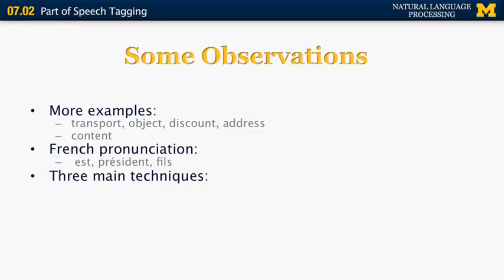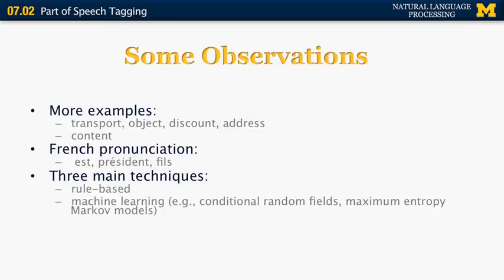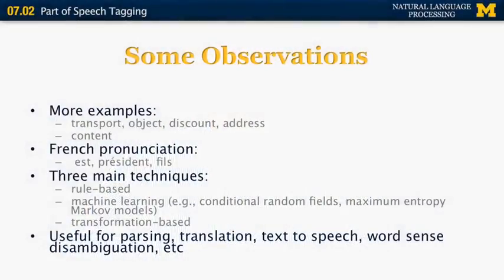The three main techniques for part of speech tagging are: first, the rule-based technique; second, machine learning methods such as conditional random fields, hidden Markov models, or maximum entropy Markov models; and third, transformation-based learning. Machine learning and transformation-based methods are more powerful than rule-based because they are trained automatically and easier to scale to other languages and domains. POS tagging is very important as it applies to parsing, translation, text-to-speech, word sense disambiguation, and pretty much all major NLP components.